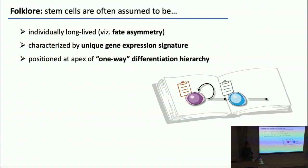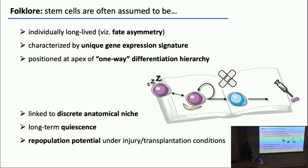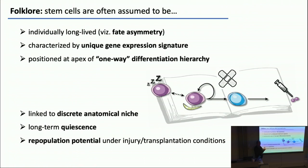That stem cells are defined by a characteristic or a unique gene expression signature — the ensemble of genes that specify the stem cell population. That these cells are positioned at the apex of a one-way differentiation hierarchy, meaning that once you leave that compartment, you don't come back. And further, that stem cells are maintained by tight physical contact to a discrete anatomical niche, that stem cells are often defined by long-term quiescence.